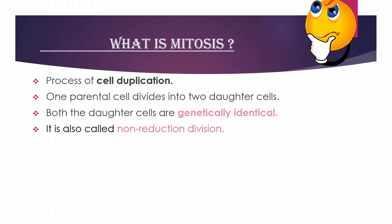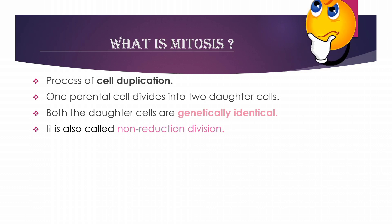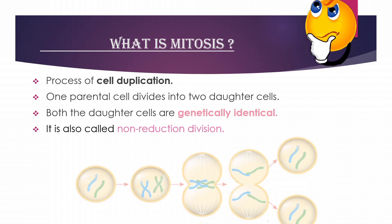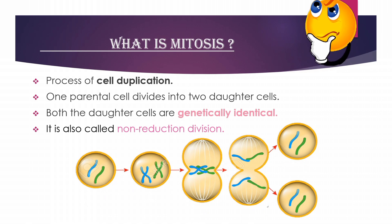For example, in human cells there are 46 chromosomes. So parental cells have 46 chromosomes, and when they divide, the resulting daughter cells also have 46 chromosomes each. This is also called non-reductional division, meaning the genetic material does not reduce — the chromosome number in daughter cells remains the same as in the parental cell.